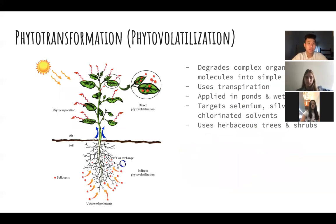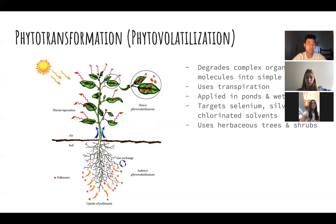Phytotransformation, also known as phytovolatilization, uses plants to take up contaminants from the soil and transform them into less toxic substances, which are then released through the stomata. More specifically, the contaminant is absorbed into the roots, modified through the xylem, and then diffuses or is released by the leaves via transpiration.